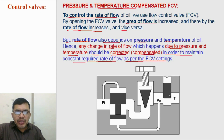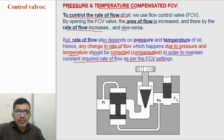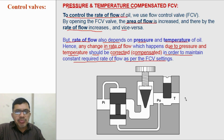And in the same way, if temperature of oil is increased, then viscosity will reduce due to which the flow rate will be slightly higher. So this variation in the flow rate due to pressure and temperature should be compensated. We need exactly 5 litres per minute rate of flow.